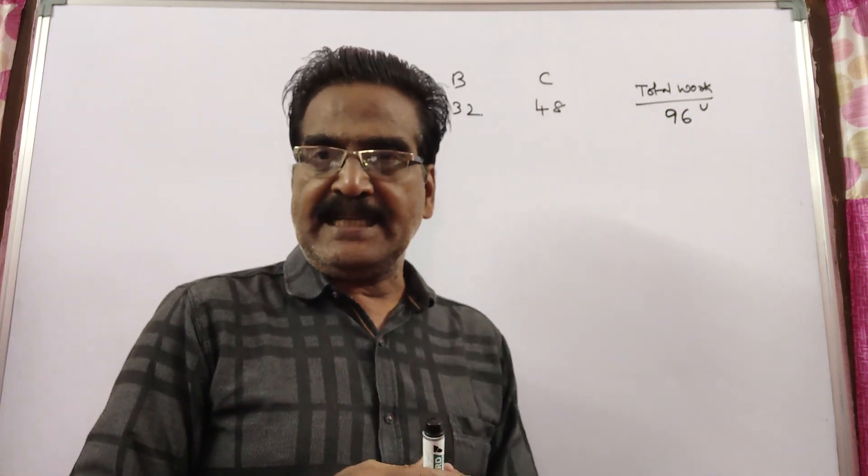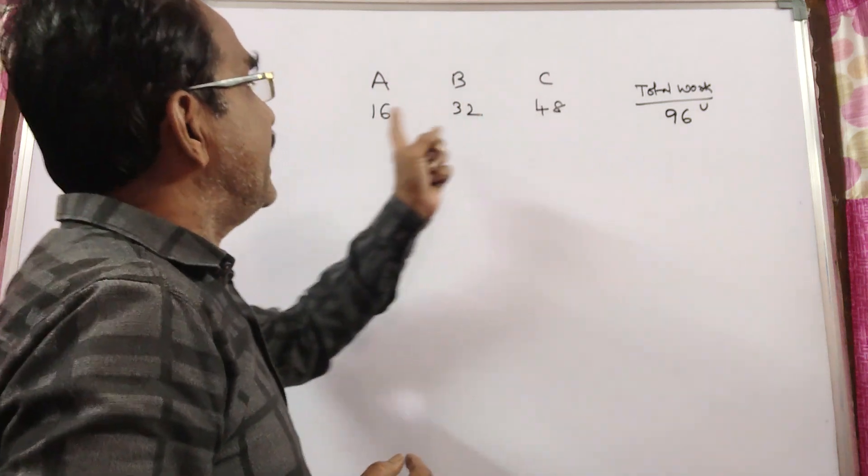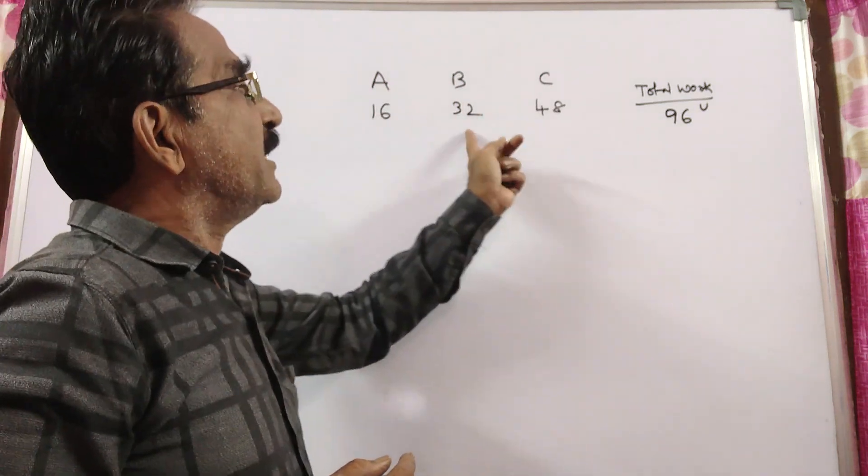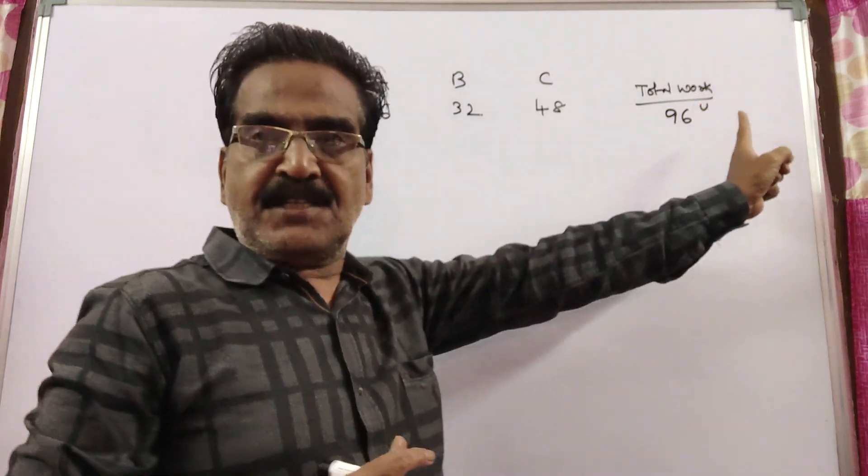Friends, say the total work is 96 units. That is the LCM of 16, 32 and 48. So the total work is 96 units.